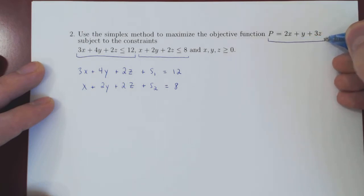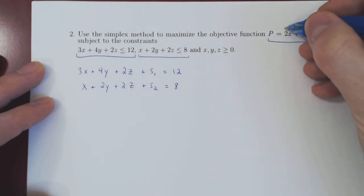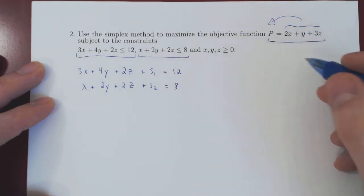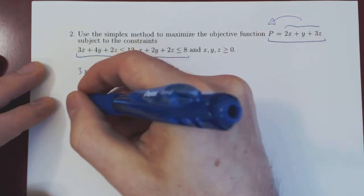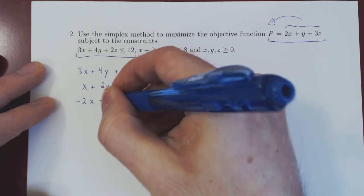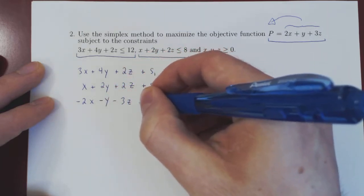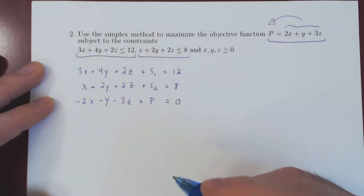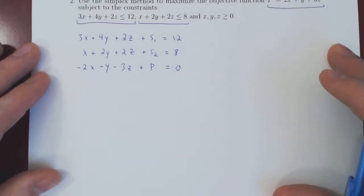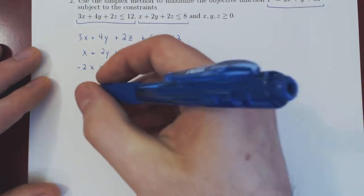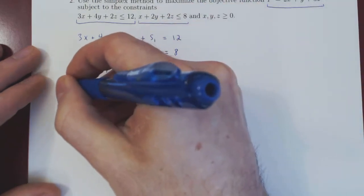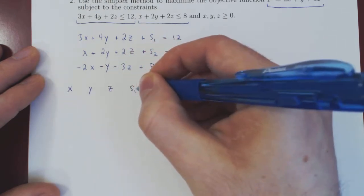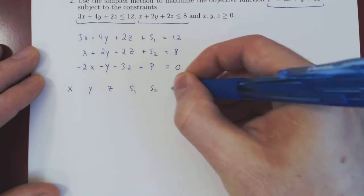We also have to transform our objective function. We always leave p as is and send everything onto the left-hand side. All of these terms become negated: negative 2x, negative y, negative 3z, plus p equals 0. And now we can construct the initial simplex matrix with variables x, y, z, slack variables s1, s2, and the objective function p.